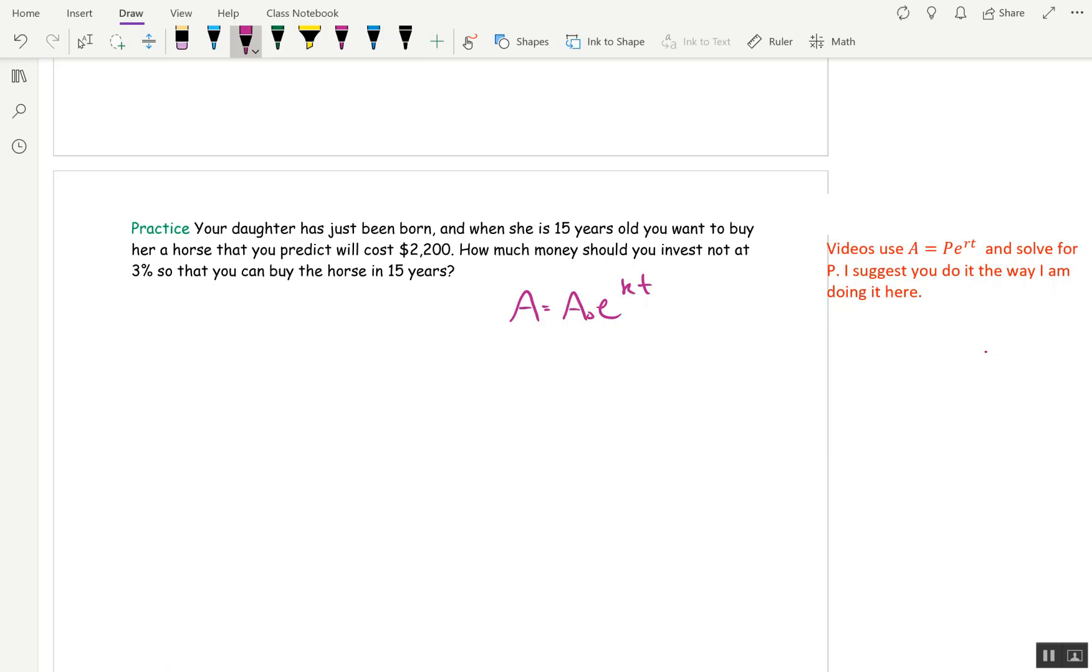I'm just going to stick with my A is A₀ E to the KT or K is R and go from there. Sometimes I will switch K to R if it's money. Just to remind myself that it's interest rate. Your daughter has just been born when she's 15, you want to buy her a horse that will cost $2,200. How much money should you invest now at 3% so that you can buy the horse in 15 years.